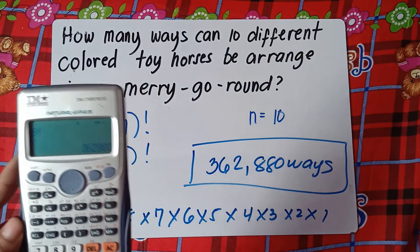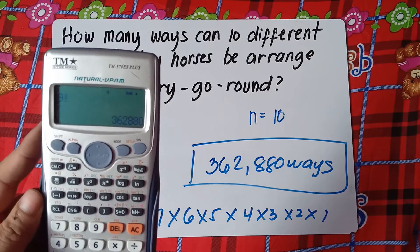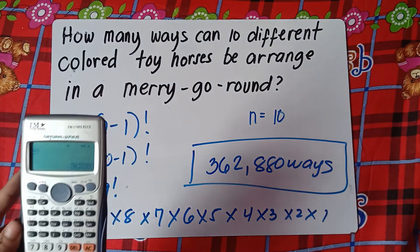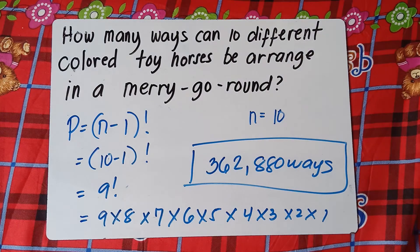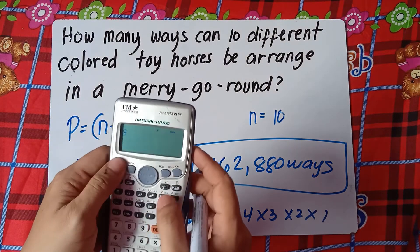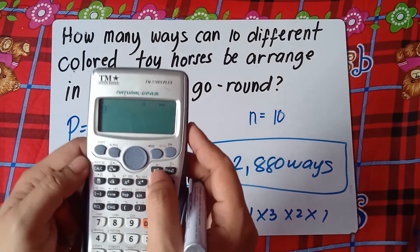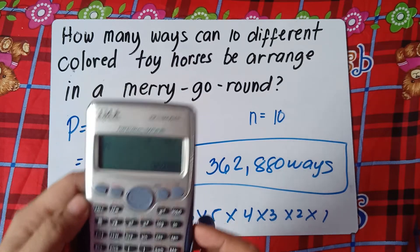We can use the calculator for this — it's very hard to multiply nine times eight times seven times six times five times four times three times two times one by hand. Just press nine, then shift, then the factorial button above x raised to the power of negative one, and you have the answer: 362,880.